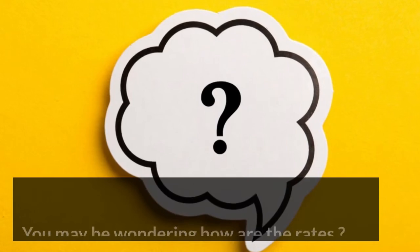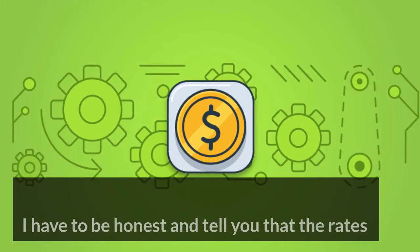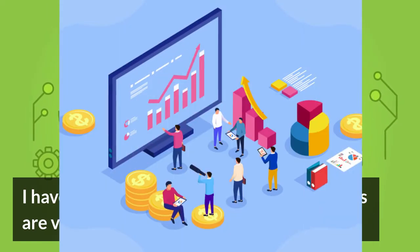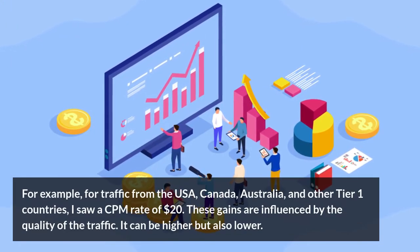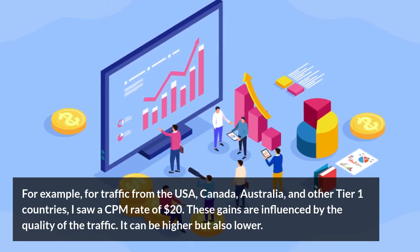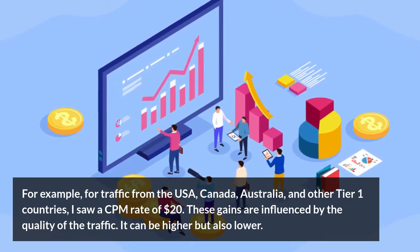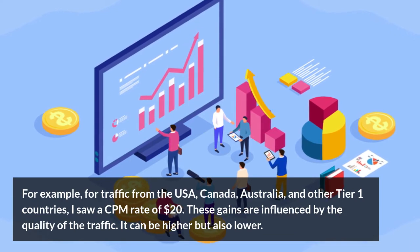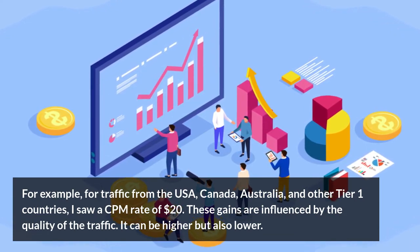You may be wondering how the rates are. I have to be honest and tell you that the rates are very good. For example, for traffic from the USA, Canada, Australia, and other Tier 1 countries, I saw a CPM rate of $20. These gains are influenced by the quality of the traffic — it can be higher but also lower.